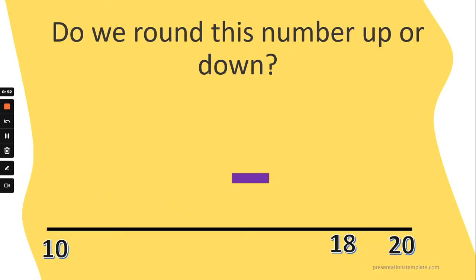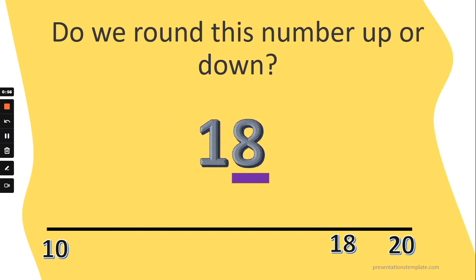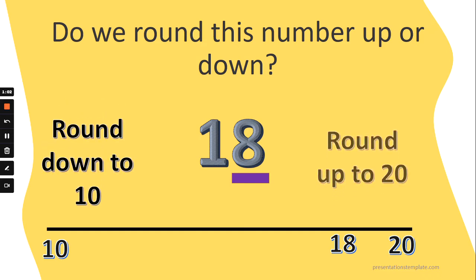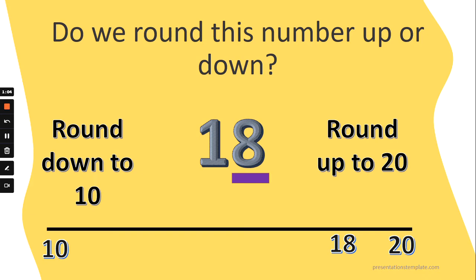So do we round this number up or down? This is the number 18, so we're looking at the ones to help us. 18 has got eight ones. Does 18 round down to 10 or does 18 round up to 20? Is 18 closer to 10 or closer to 20? Look at the ones, let's sing the song. Five, six, seven, eight or nine — we round up to the next tens on the number line. 18 rounds up to 20, which means it is closer to 20. Well done.